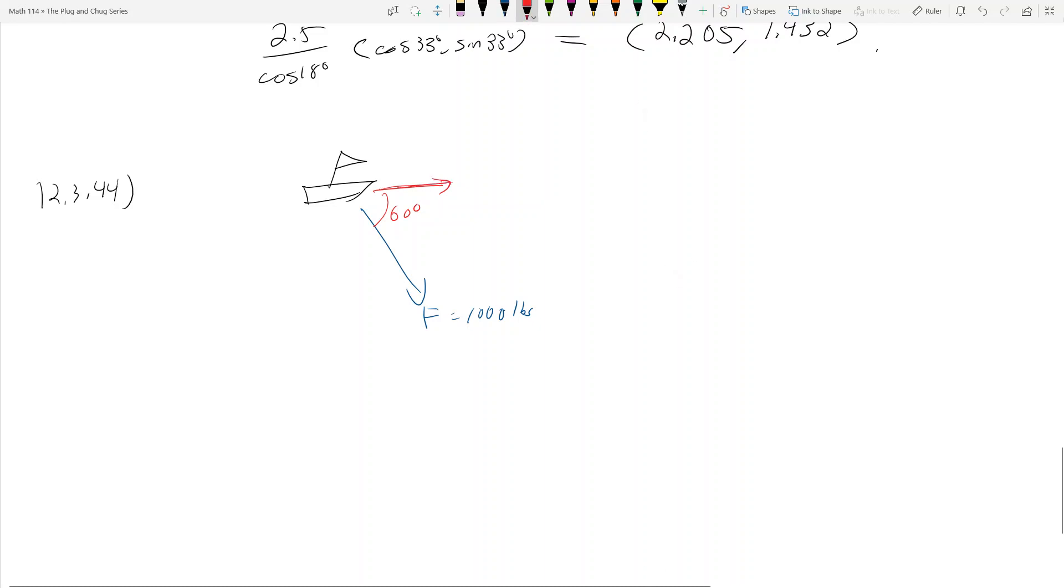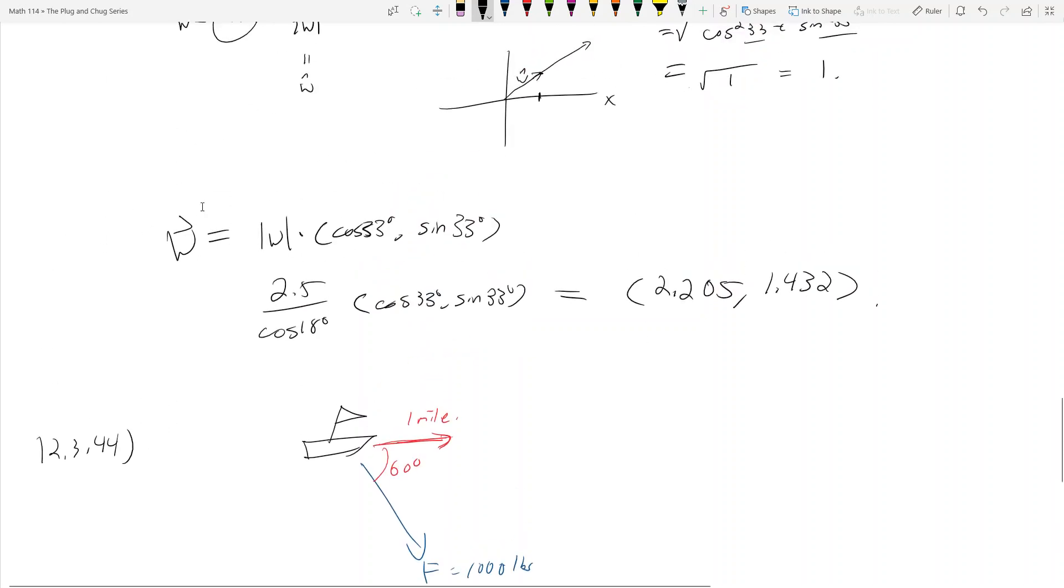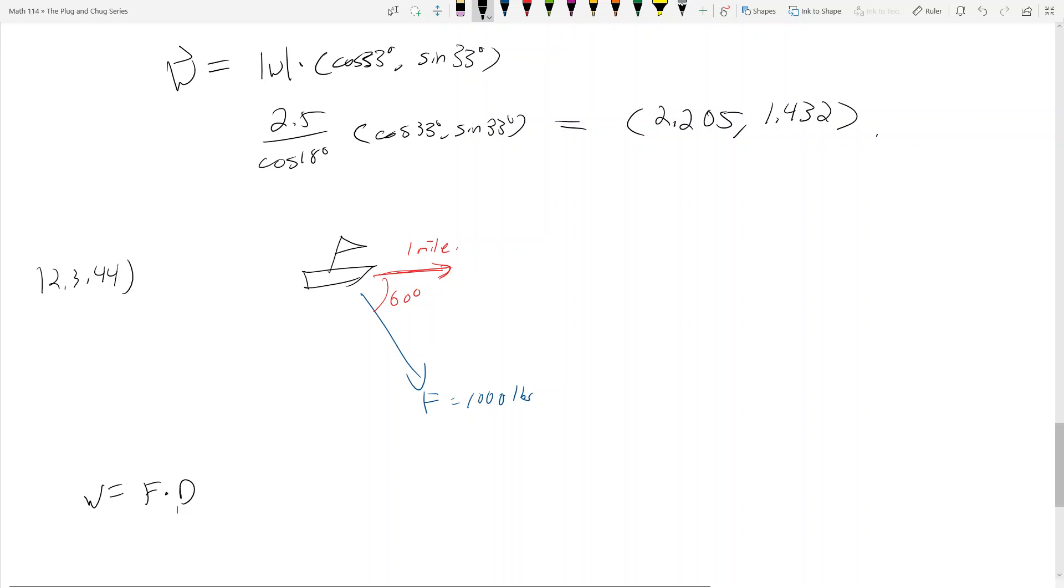The boat wants to travel one mile. So essentially we need to leverage the fact that force is equal to work times distance, or work dot distance, which is the way your book presents it. Or, what am I saying - work is equal to force times distance. You can tell I'm not a physics major.